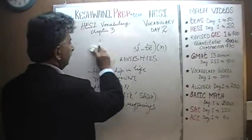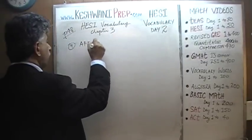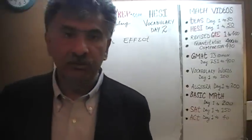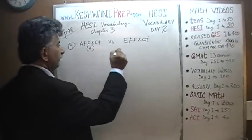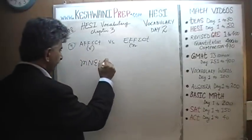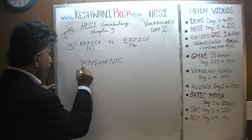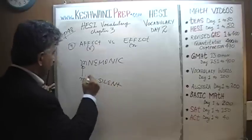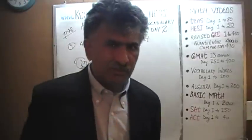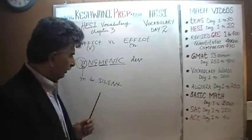Affect versus effect. Affect is a word, effect is a word. Well actually, let's take a second here. Do you know this word 'mnemonic'? Do you know how to pronounce it? The M is silent — one does not pronounce the M. It is pronounced 'mnemonic.' A mnemonic device is something — this is a tricky one — a memory device that helps us remember something.